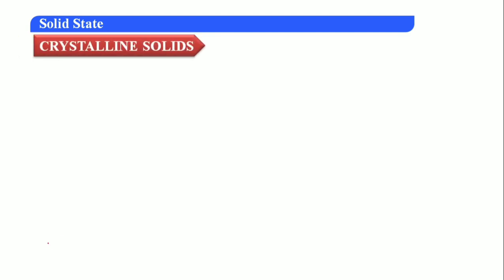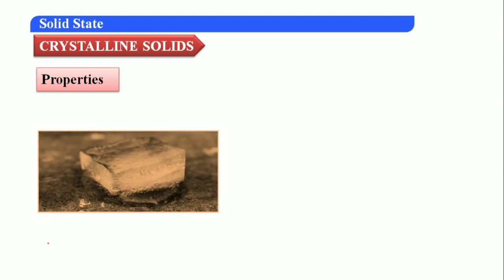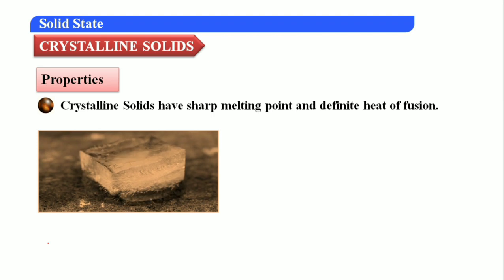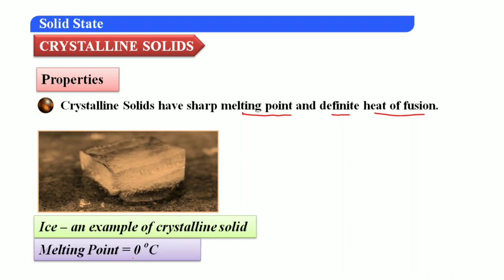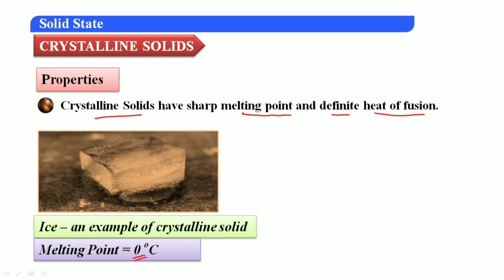Some characteristic properties of crystalline solids: crystalline solids have a sharp melting point and definite heat of fusion. For example, ice is a crystalline solid which melts at exactly zero degrees Celsius — this is fixed, one hundred percent. So ice is a crystalline solid with a melting point of zero degrees Celsius.